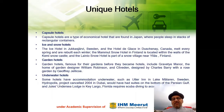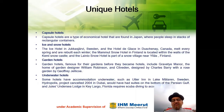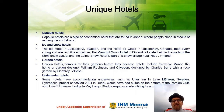Garden Hotels: famous for their gardens before they became hotels include Gravetye Manor, the home of garden designer William Robinson, and Cliveden, designed by Charles Barry with a rose garden by Geoffrey Jellicoe. Underwater Hotels: some hotels have accommodation underwater, such as the Utter Inn in Lake Mälaren, Sweden. The Hydropolis project in Dubai would have had suites at the bottom of the Persian Gulf, and Jules' Undersea Lodge in Key Largo, Florida requires scuba diving to access the guest rooms.